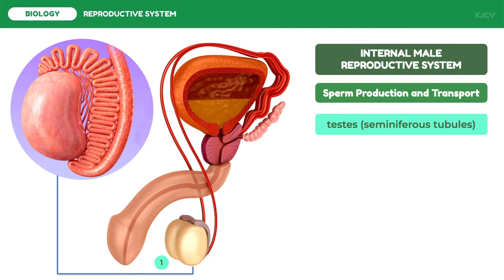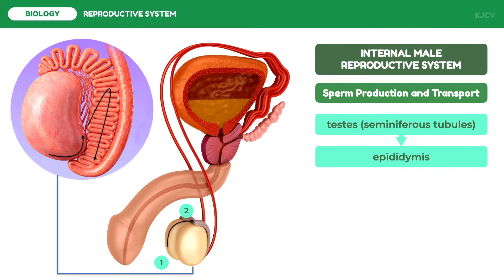Aside from this, testosterone is produced in the testes. Mature sperm cells are later on stored in a tube beside the testes known as the epididymis. These sperm cells are stored until they are released from the body through a forceful expulsion known as ejaculation. During ejaculation, the sperm cells will pass through a long tube called the vas deferens.